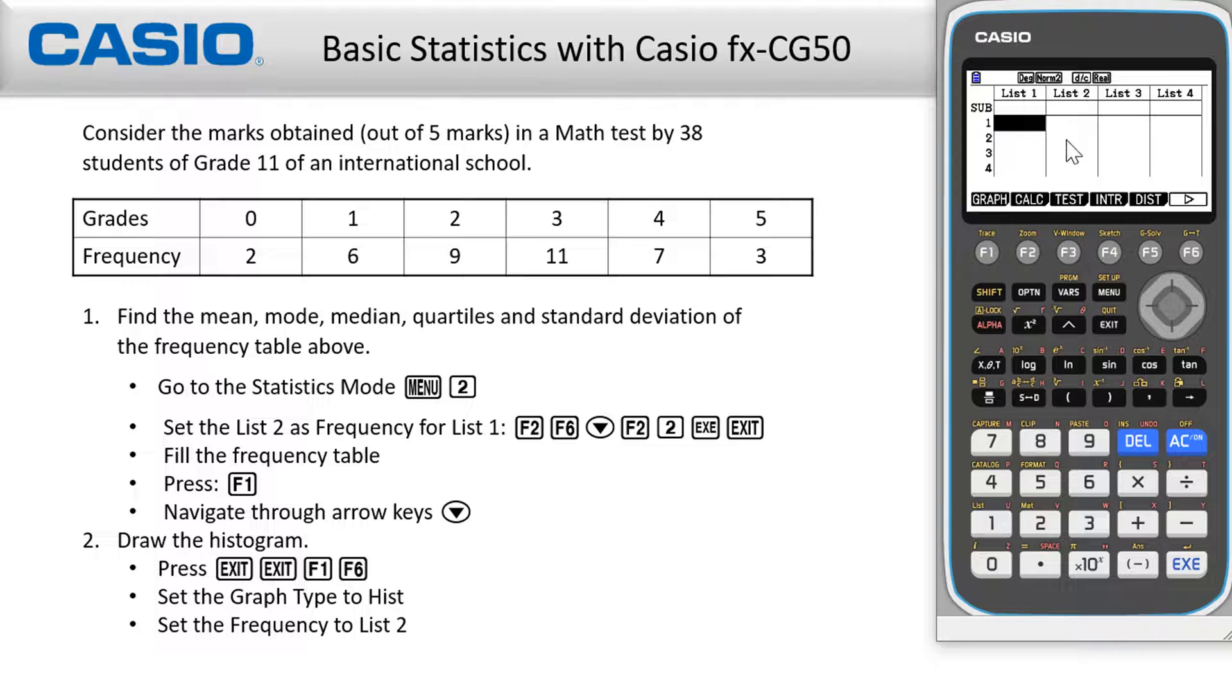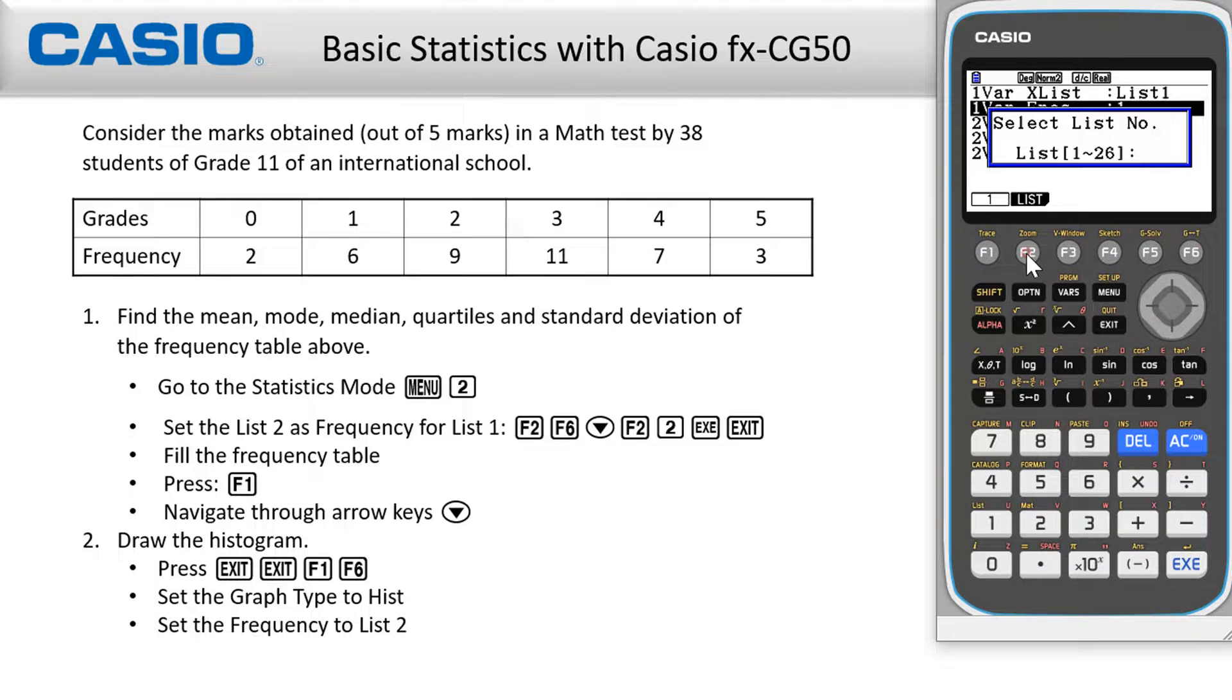Now, to set list two as frequency for grades of students, press calc F2. Then, set F6. Change the one var frequency to list two by pressing F2 button. Select two, then execute.